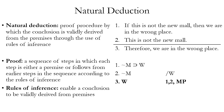Here's an example argument in natural language, English, put into standard form: 'If this is not the new mall, then we are in the wrong place. This is not the new mall. Therefore, we are in the wrong place.' In standard form, we have numbered premises, the conclusion last, and a line separating premises from conclusion.